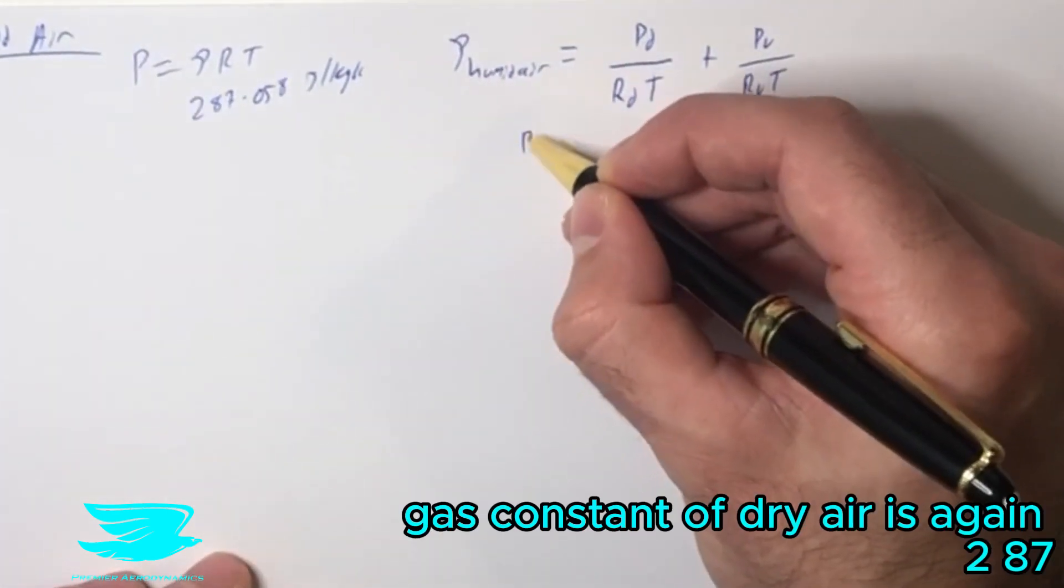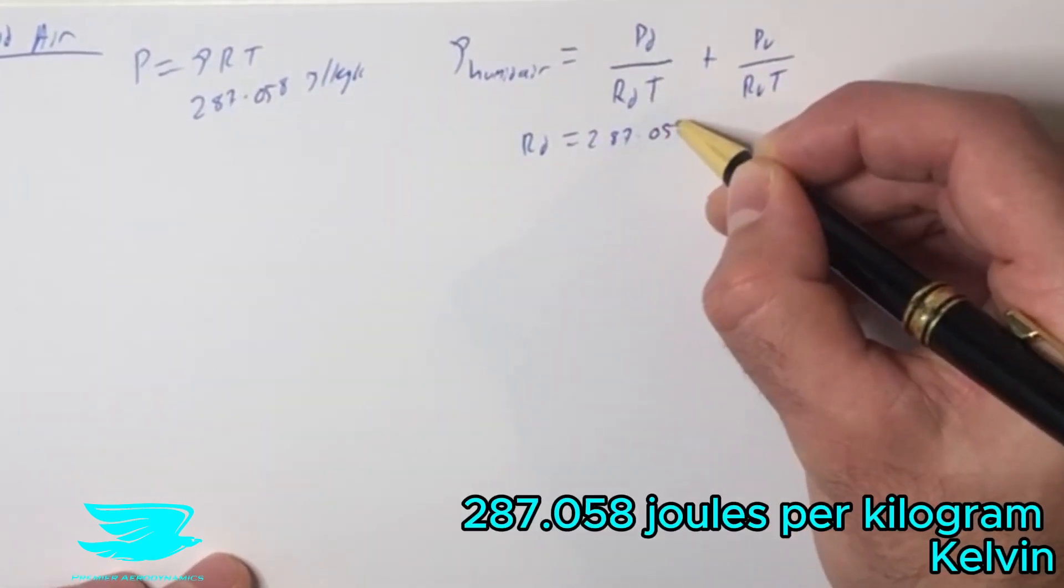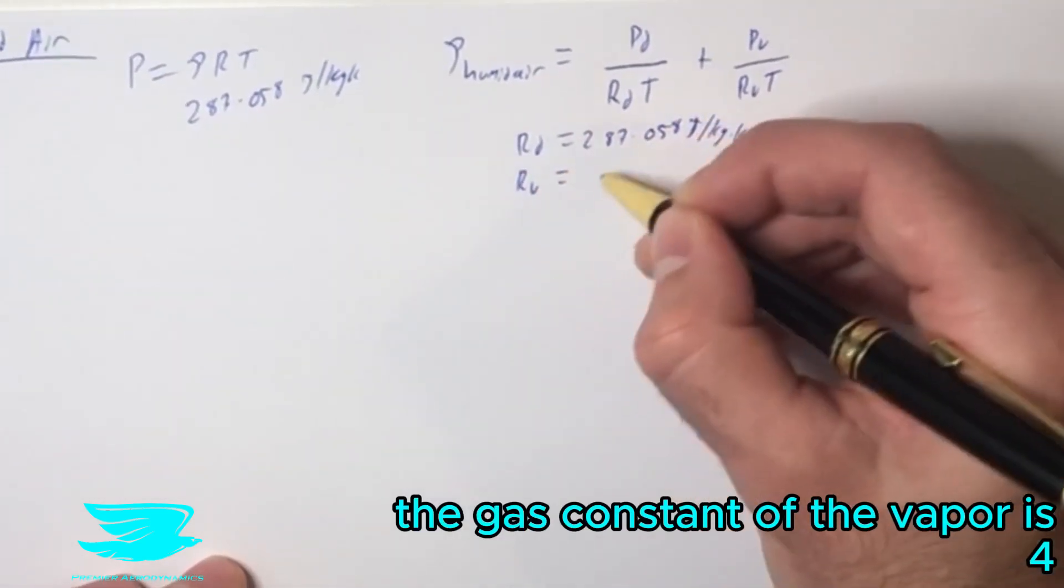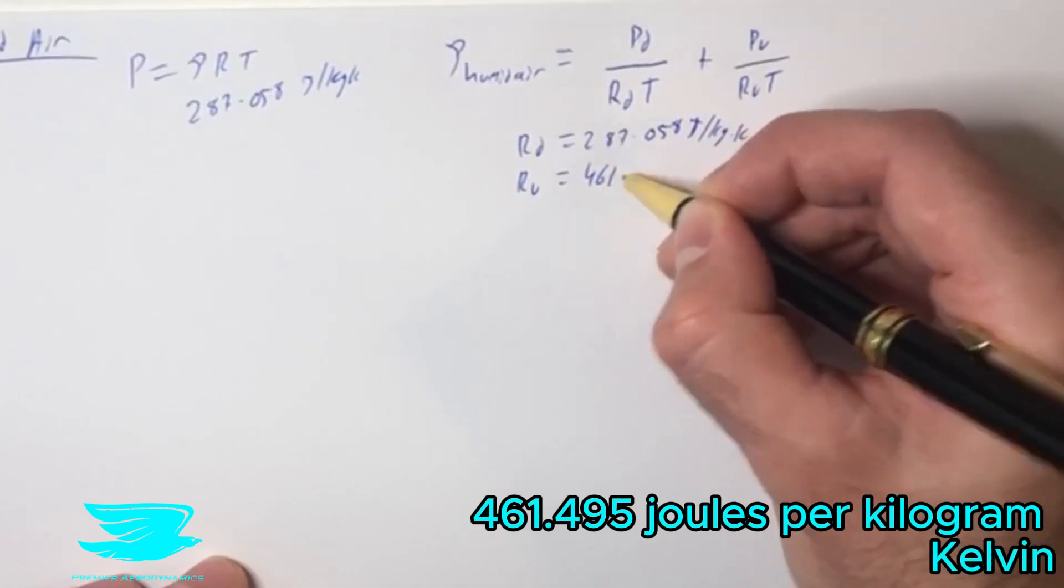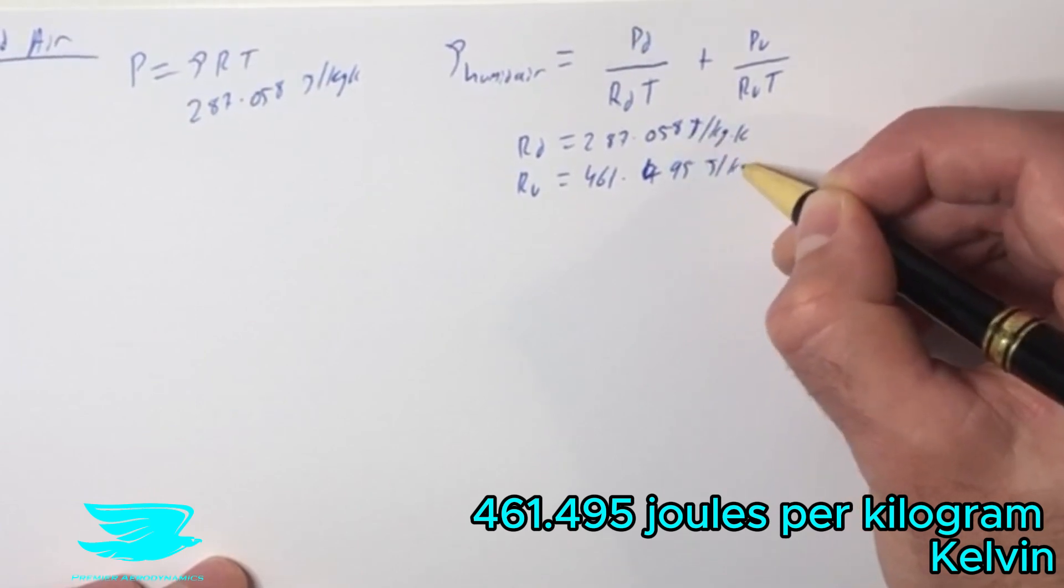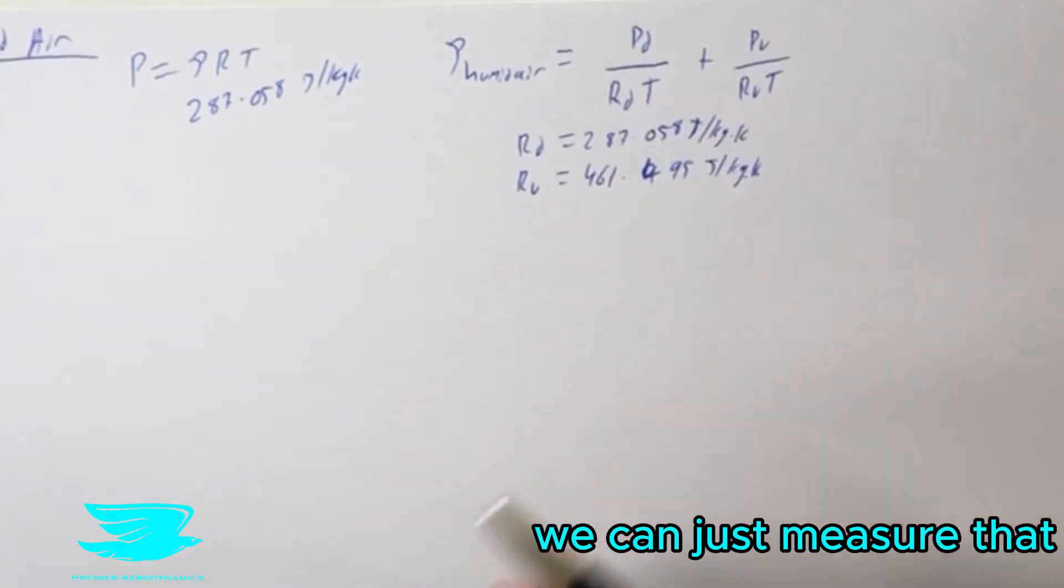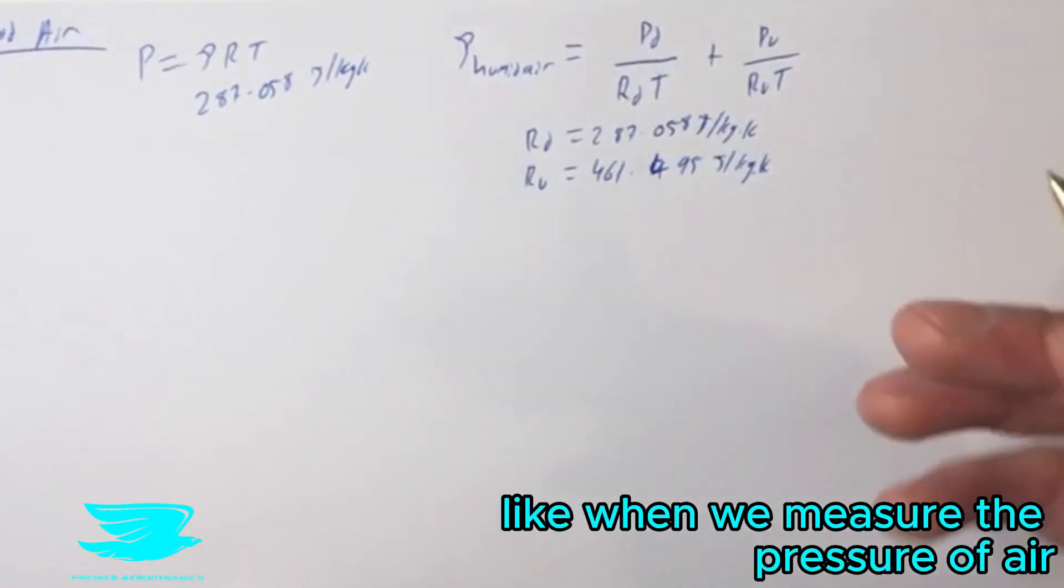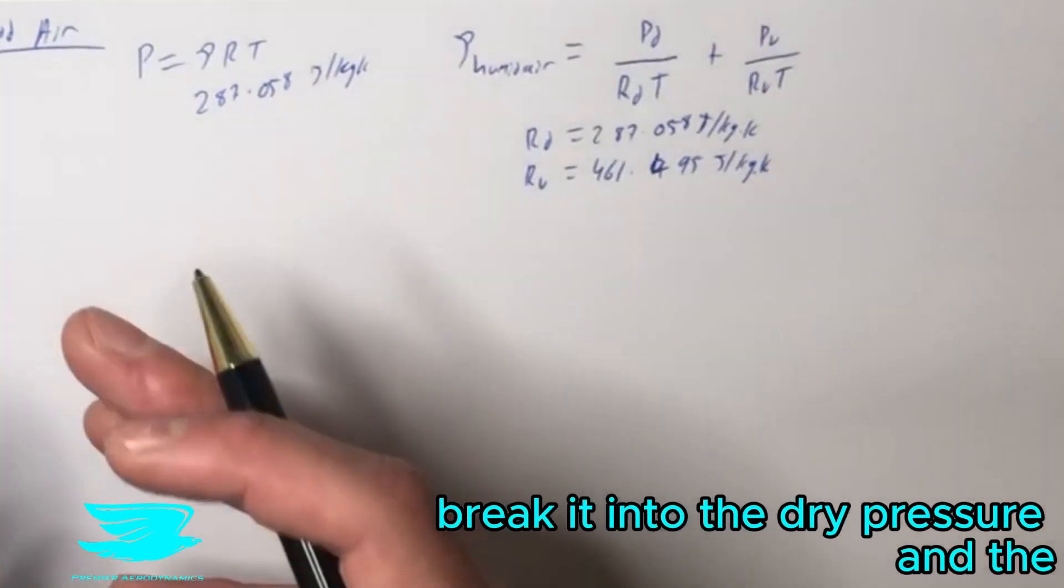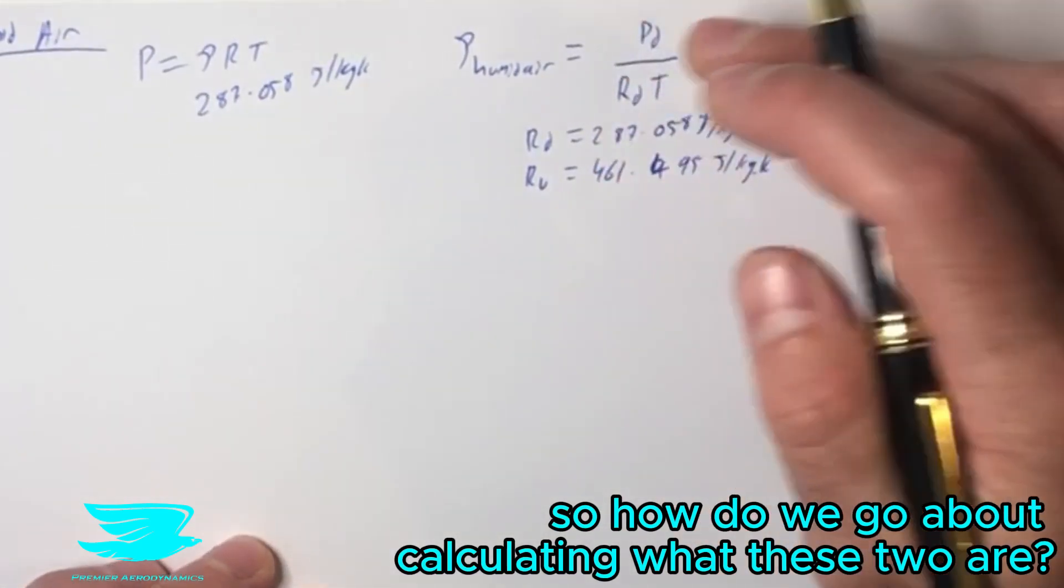The gas constant of dry air is again 287.058 joules per kilogram kelvin. The gas constant of the vapor is 461.495 joules per kilogram kelvin. The temperatures are quite easy, we can just measure that. But what about the pressures? When we measure the pressure of air, we literally just measure the total pressure. We can't really break it into the dry pressure and the wet pressure, the vapor pressure. So how do we go about calculating what these two are?